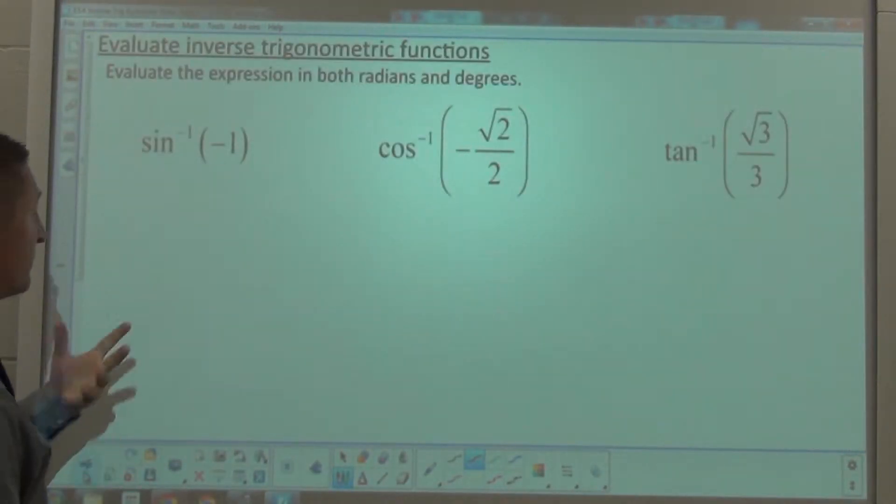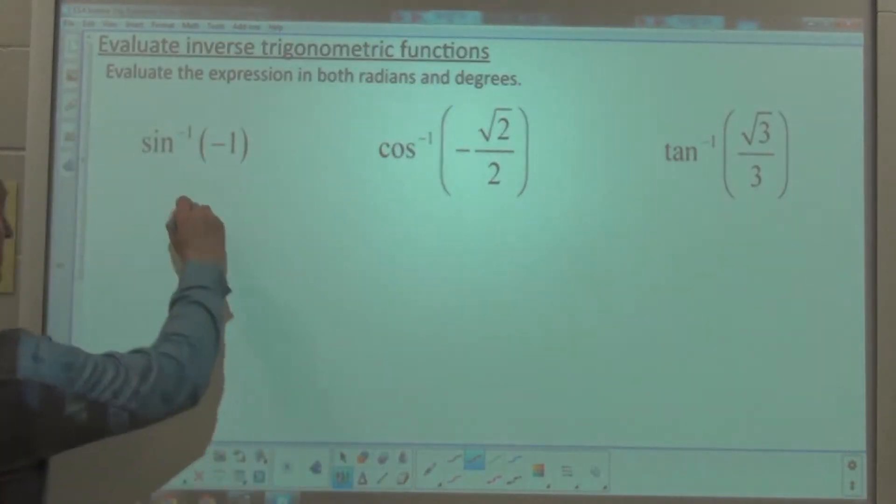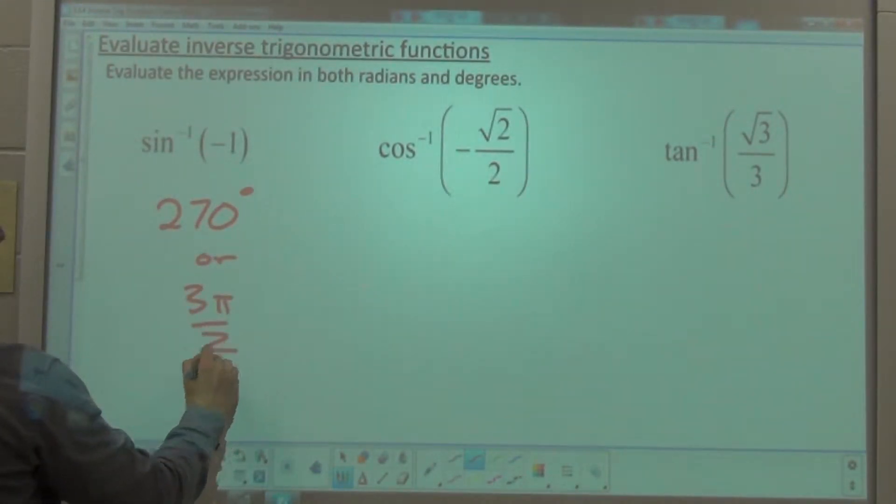That's inverse trig functions, we work backwards. So, this is going to be 270 degrees, or 3 halves of pi.